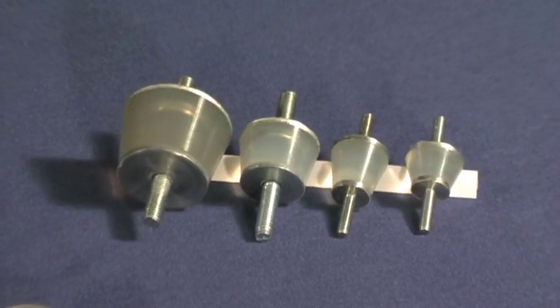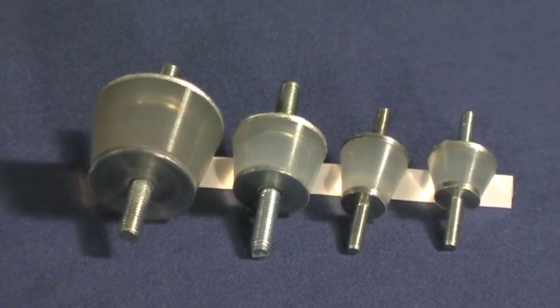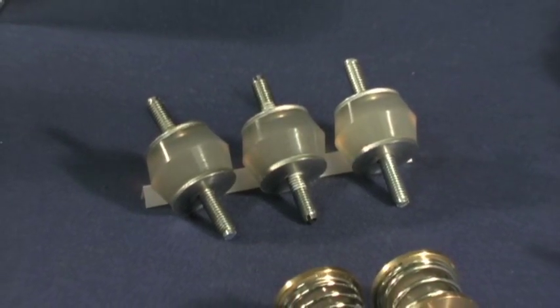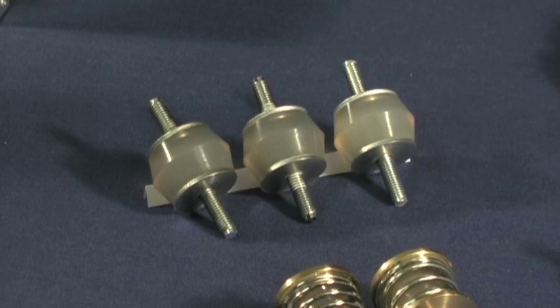Conical shaped mounts have a load range from 0.9 to 55 pounds, and the cylindrical mounts have a load range from 4 to 27 pounds, depending on the size you select.